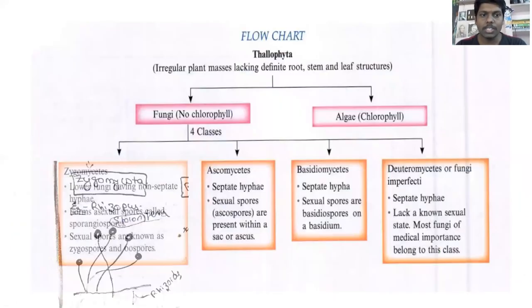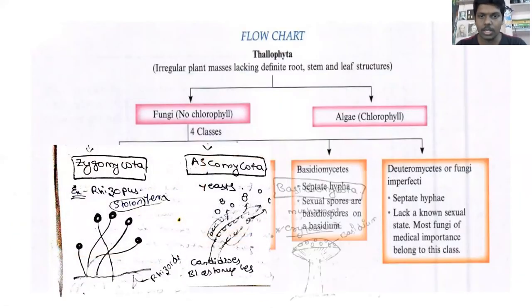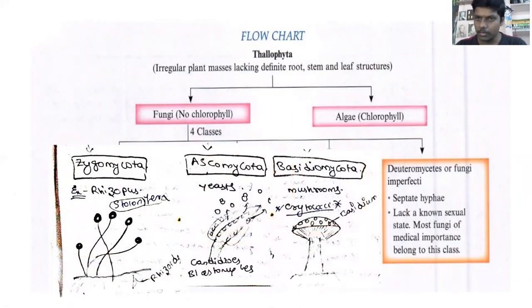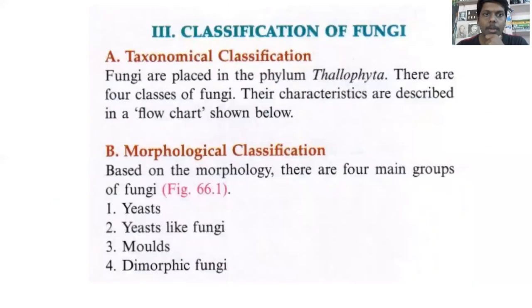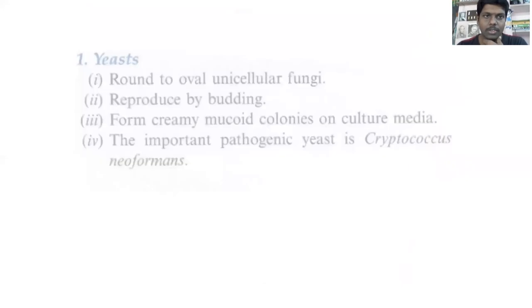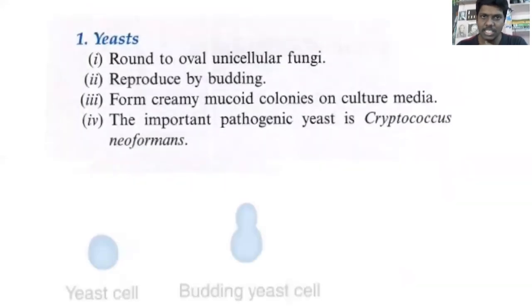Then we discussed about Morphological Classification. According to Morphological Classification, fungi are of four types: yeast, yeast-like fungi, molds, and dimorphic fungi. The first one is yeast — it is a unicellular fungus.